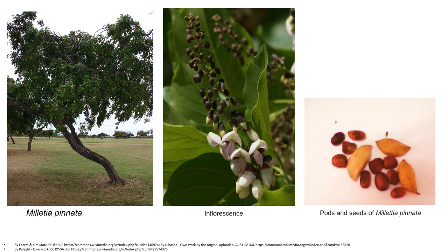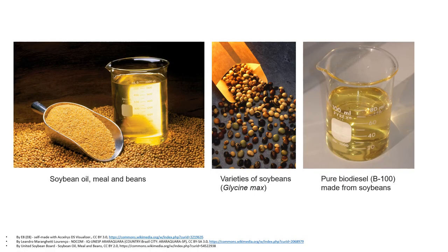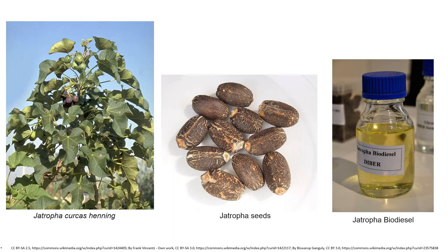Here are some crops and plant resources from which oil samples are collected for biodiesel production. The first is Malania pinata — the inflorescences and seeds are shown, with the seeds producing oil for biodiesel. Another resource is soybean oil; varieties of soybean are considered an excellent source for producing biodiesel. Jatropha — this picture shows the plant and its seeds from which oil is extracted and used for preparing biodiesel.